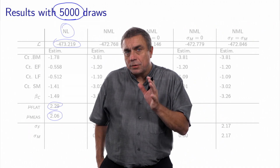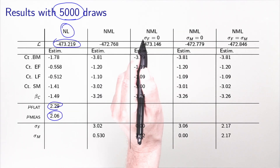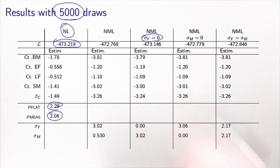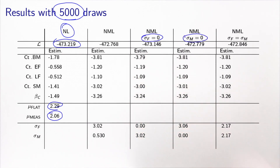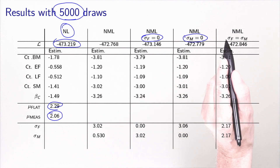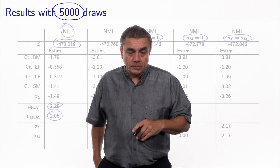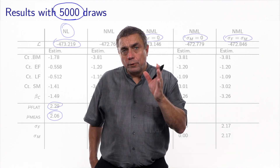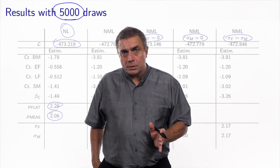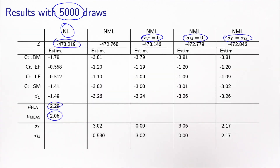Because estimating both sigmas simultaneously is problematic, I normalized the model using three different normalizations. In the first case, I imposed sigma_F to be equal to zero. In the second, I imposed sigma_M to be equal to zero. And in the third, I imposed the two sigmas to be equal. These are normalizations, so the four mixture models are completely equivalent.